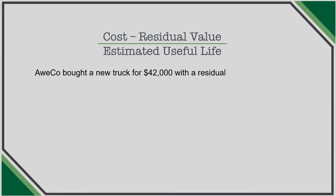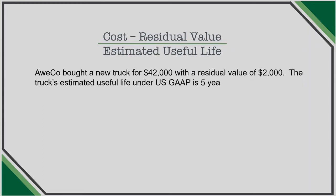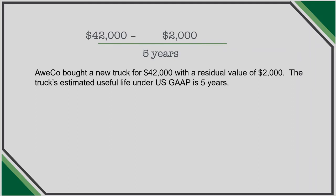Let's look at an example. A company bought a new truck for $42,000 with a residual value of $2,000. The truck's estimated useful life under US GAAP is five years. Depreciating under straight line: cost is $42,000 reduced by the $2,000 residual value, giving us $40,000 net value divided over five years, resulting in $8,000 of depreciation per year.